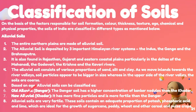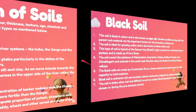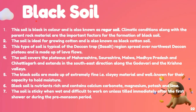The next type is black soil. This soil is black in color and is also known as Regur soil. Climatic conditions along with the parent rock material are important factors for its formation. It is also known as black cotton soil because it is ideal for growing cotton.